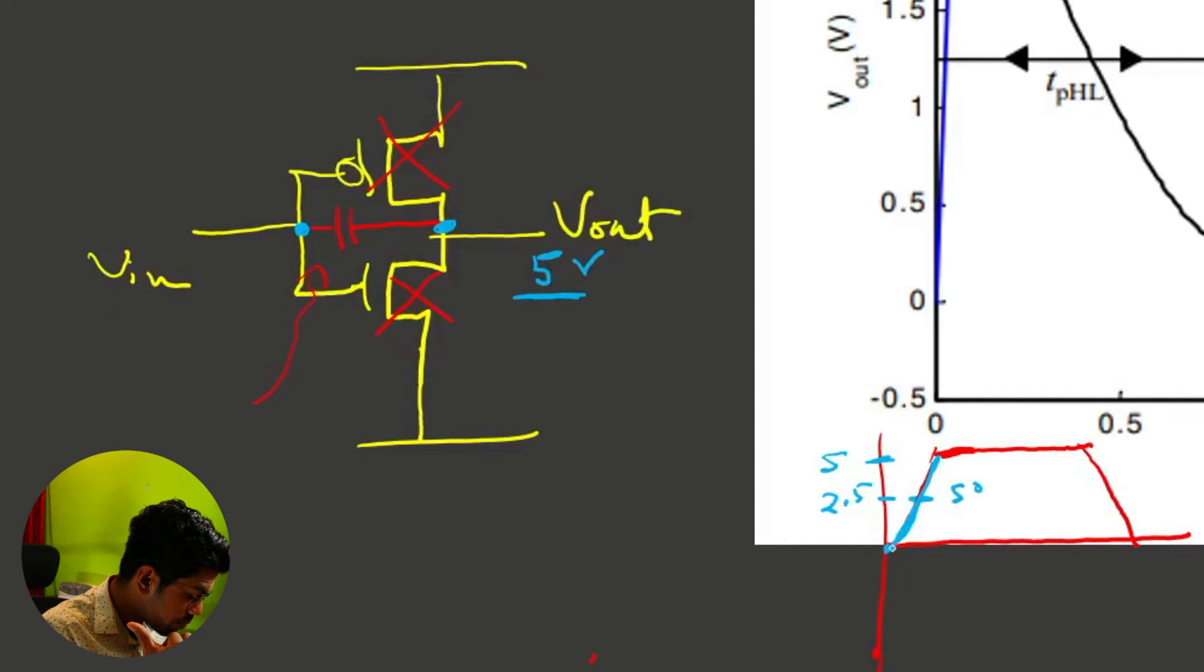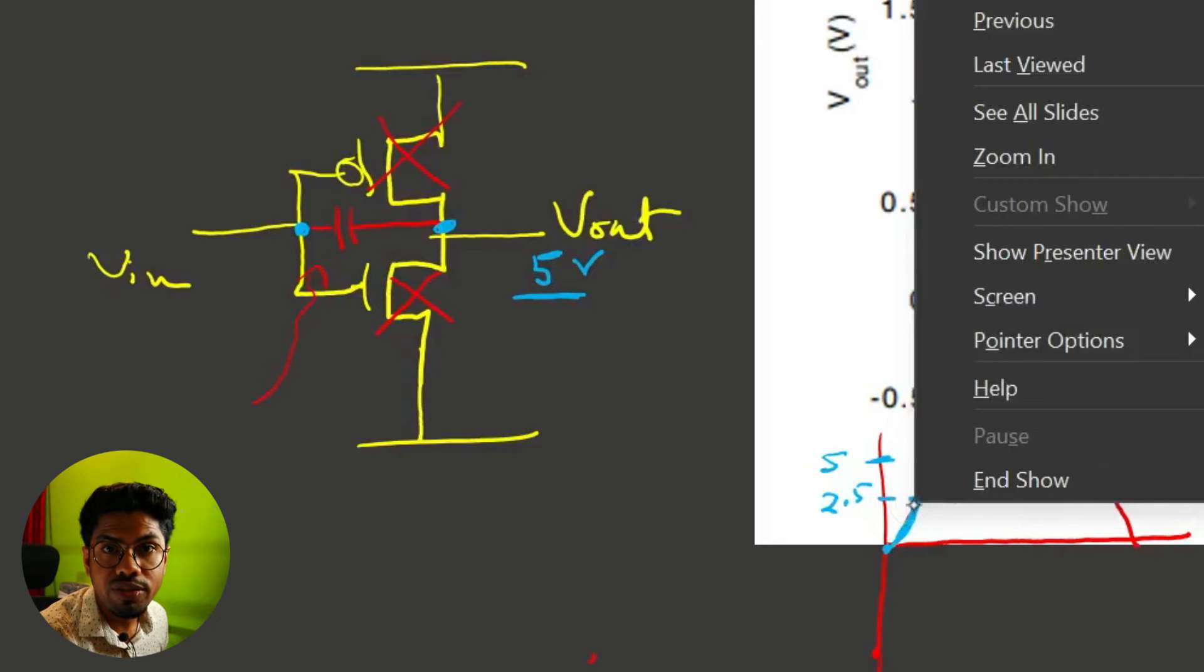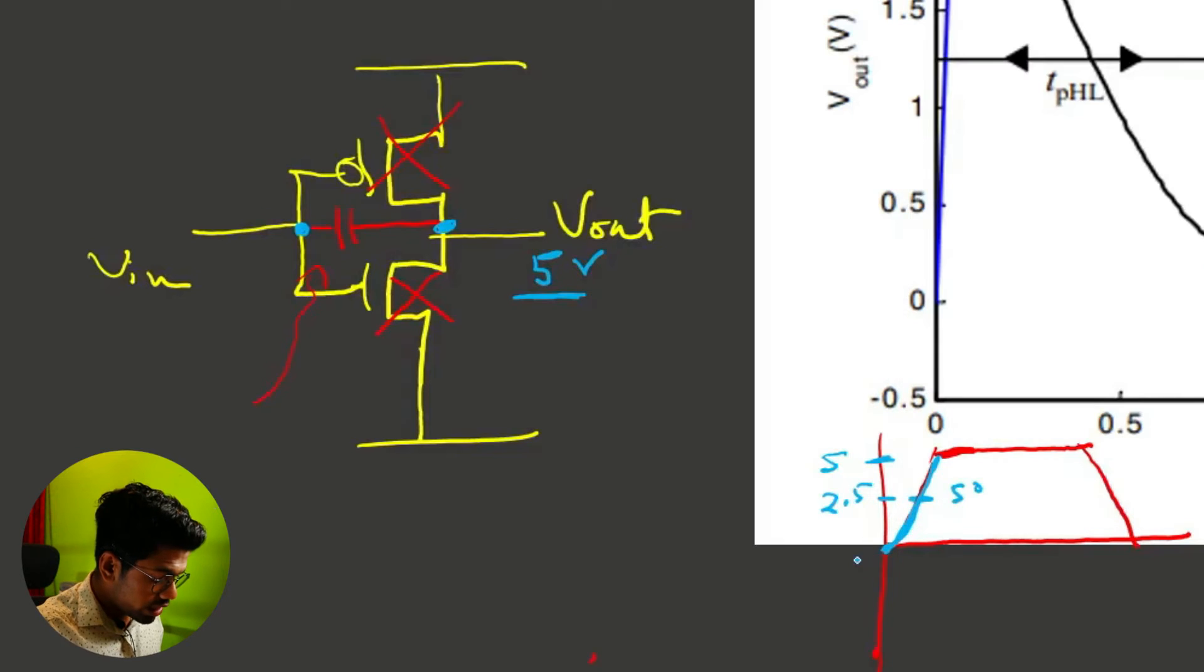Whenever we have 5 volts at the output, at the input we will for sure have a zero or low logic—that's the inverter, right? Now we're changing our input from logic zero to some high logic. At this moment, because you're changing the voltage at the input of your capacitance, and these things are happening very fast in the nanosecond—I've just enlarged it—you're changing this in a moment from zero volts to, say, 2.5 volts or any voltage, but you're increasing it from zero volts.